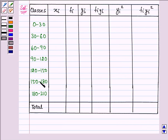Now here the classes are given to us as 0 to 30, 30 to 60 and so on till 180 to 210. The frequencies are given to us as 2, 3, 5, 10, 3, 5 and 2.